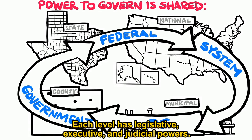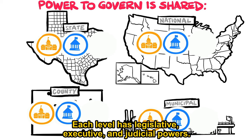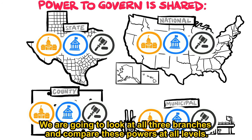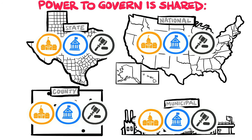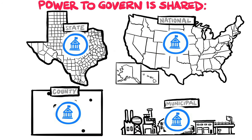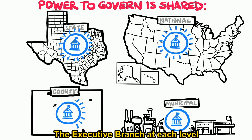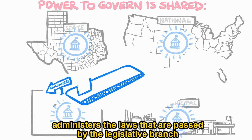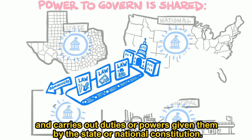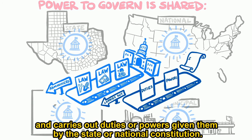Each level has legislative, executive, and judicial powers. We are going to look at all three branches and compare these powers at all levels. But today, let's talk about the executive branch. The executive branch, at each level, administers the laws that are passed by the legislative branch and carries out duties or powers given them by the state or national constitution.